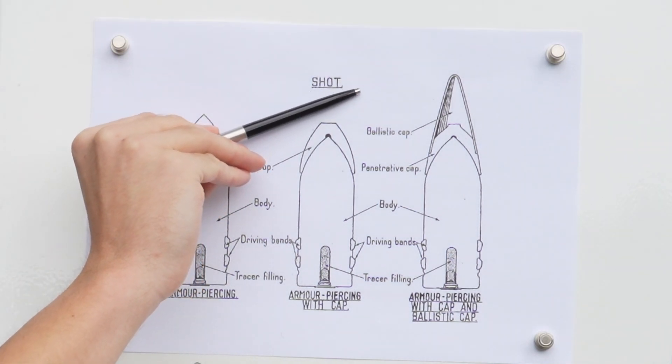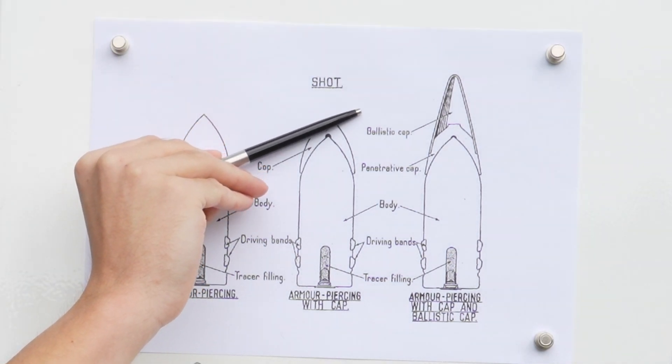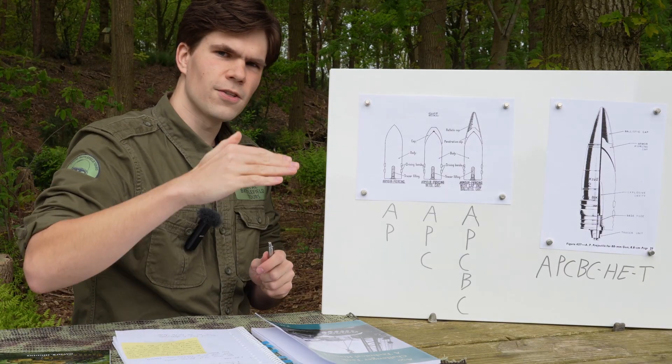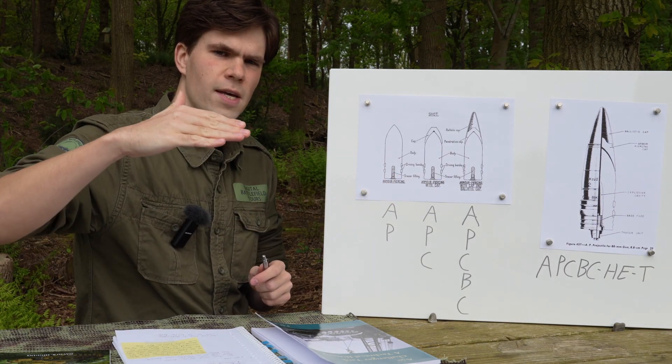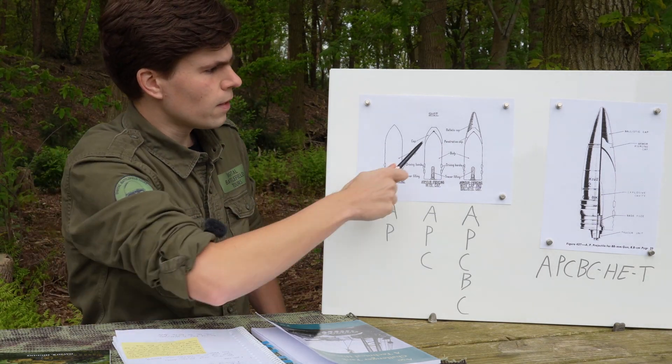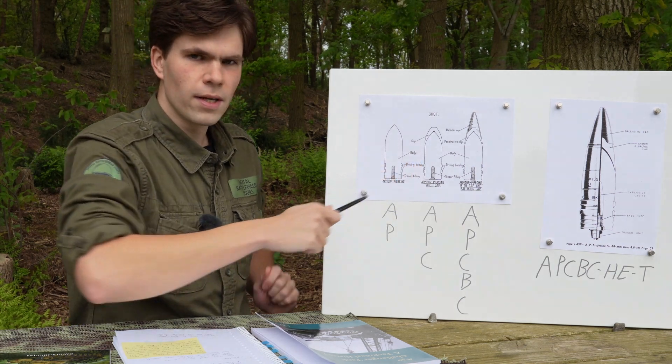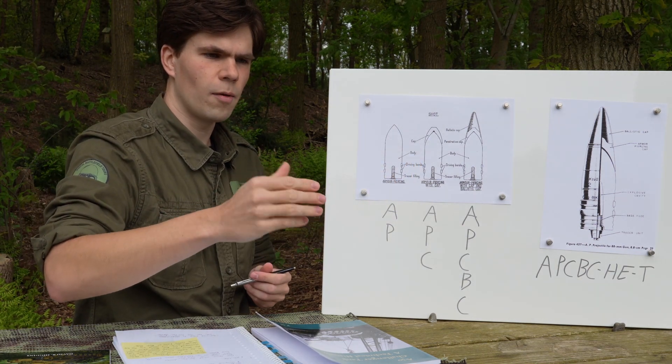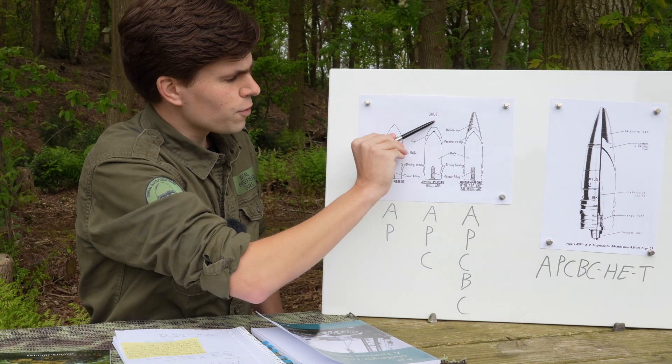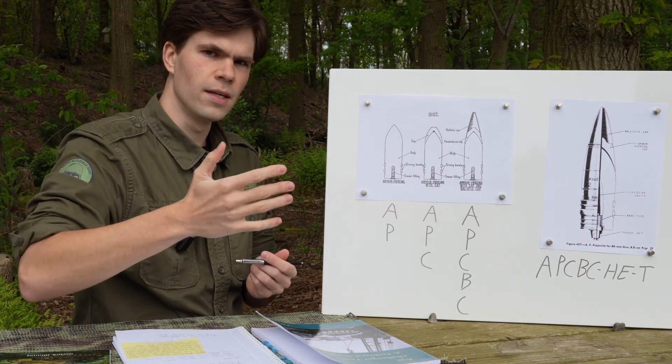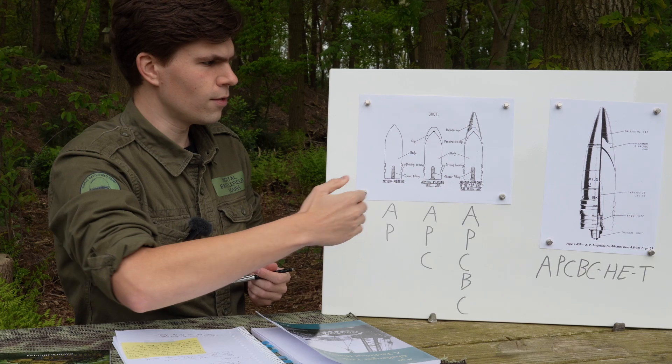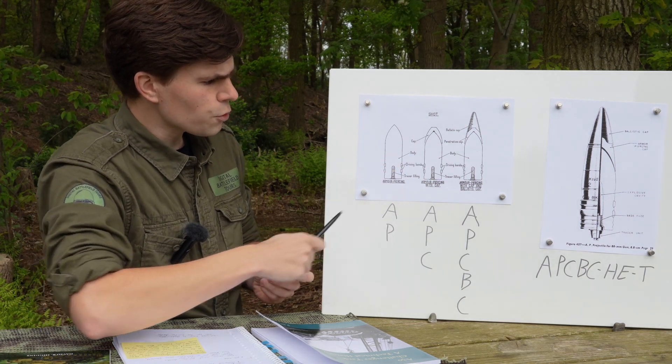To make an initial entry and then the rest of the shell can normalize itself into the armor. So instead of seeking the path of least resistance, the softer penetrating cap gives it a bit of grip into an angled plate so the rest of the projectile can more easily punch its kinetic energy into it and then penetrate.